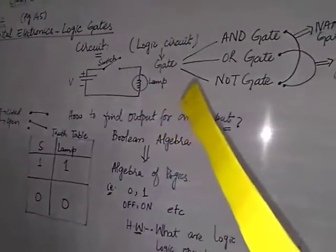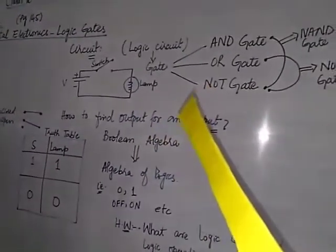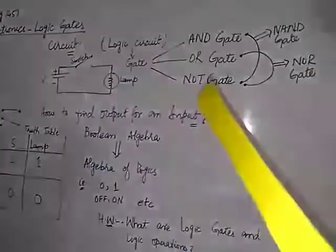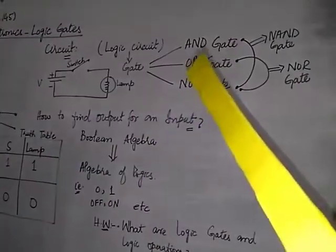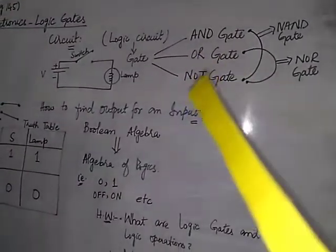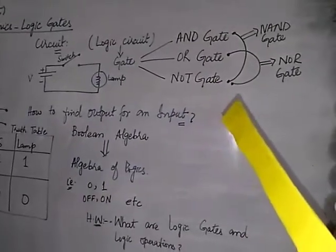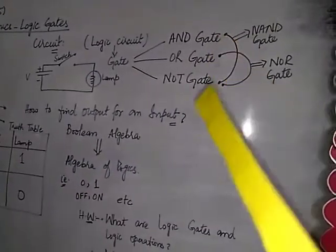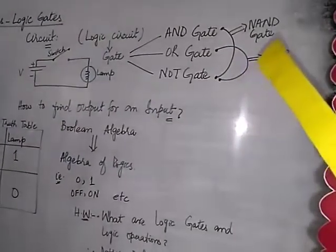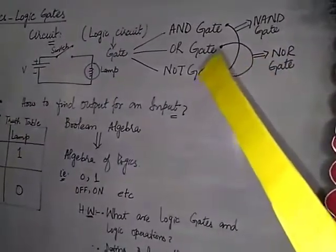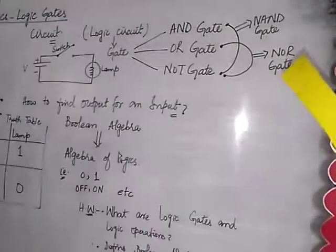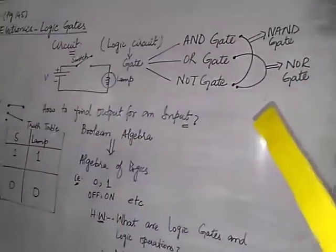We have different kinds of logic gates or logic circuits which give values according to the required conditions. Some of these are AND gate, OR gate, NOT gate. Furthermore, we shall read about the combination of AND and NOT gate which is known as NAND gate. The other is the combination of OR and NOT gate which is known as NOR gate. We will learn about these gates in the next lectures.